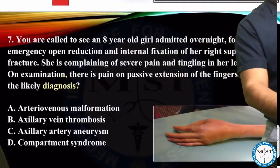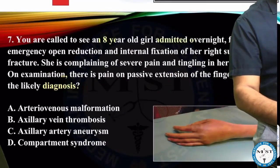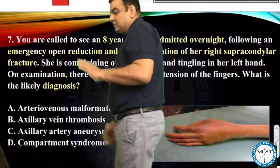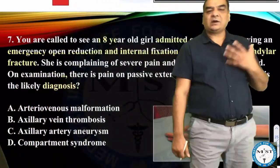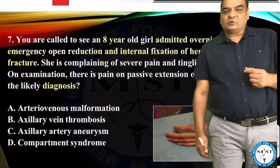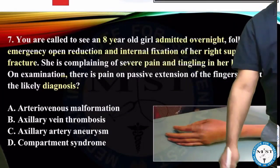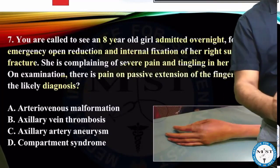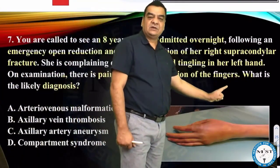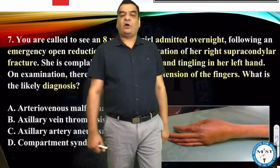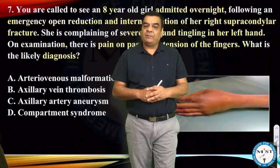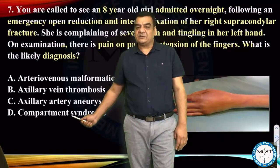Looking at the question: an eight-year-old admitted overnight following an emergency open reduction and internal fixation of a right supracondylar fracture. This eight-year-old girl has received treatment for a supracondylar fracture of the humerus. She is now complaining of severe pain and tingling in her hand. On examination there is pain on passive extension of the fingers. The most important keyword here is pain on passive extension - pain on passive stretching is a classical feature of compartment syndrome. So we'll be going with compartment syndrome.